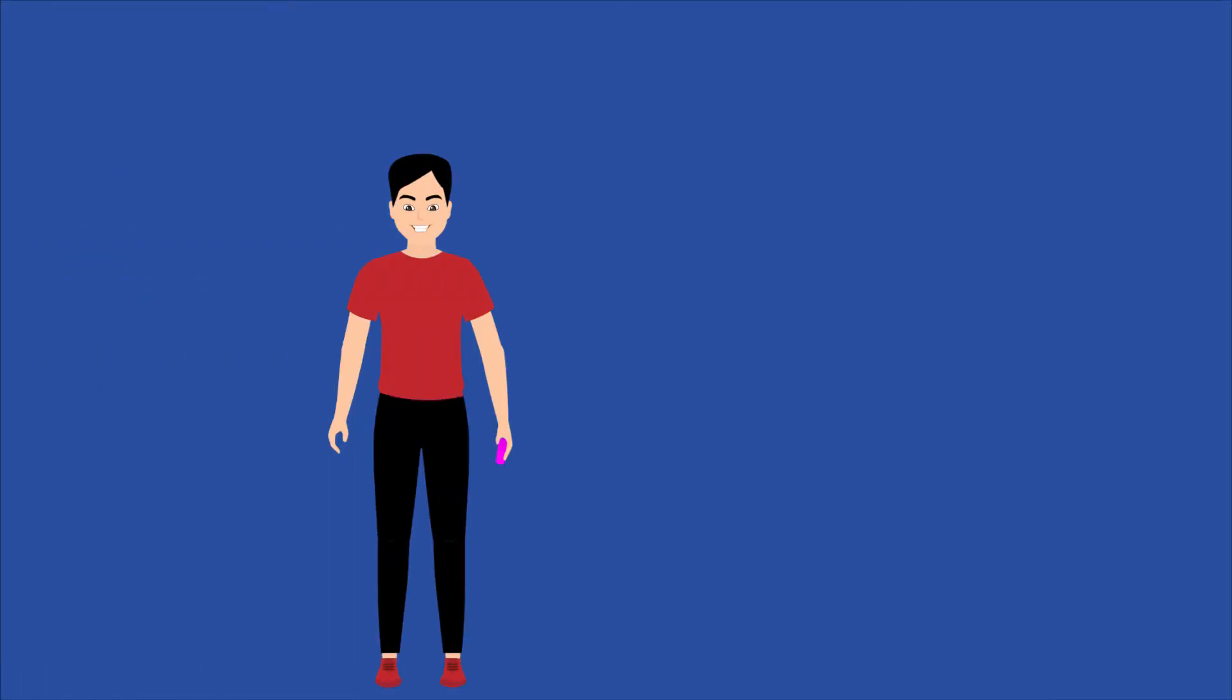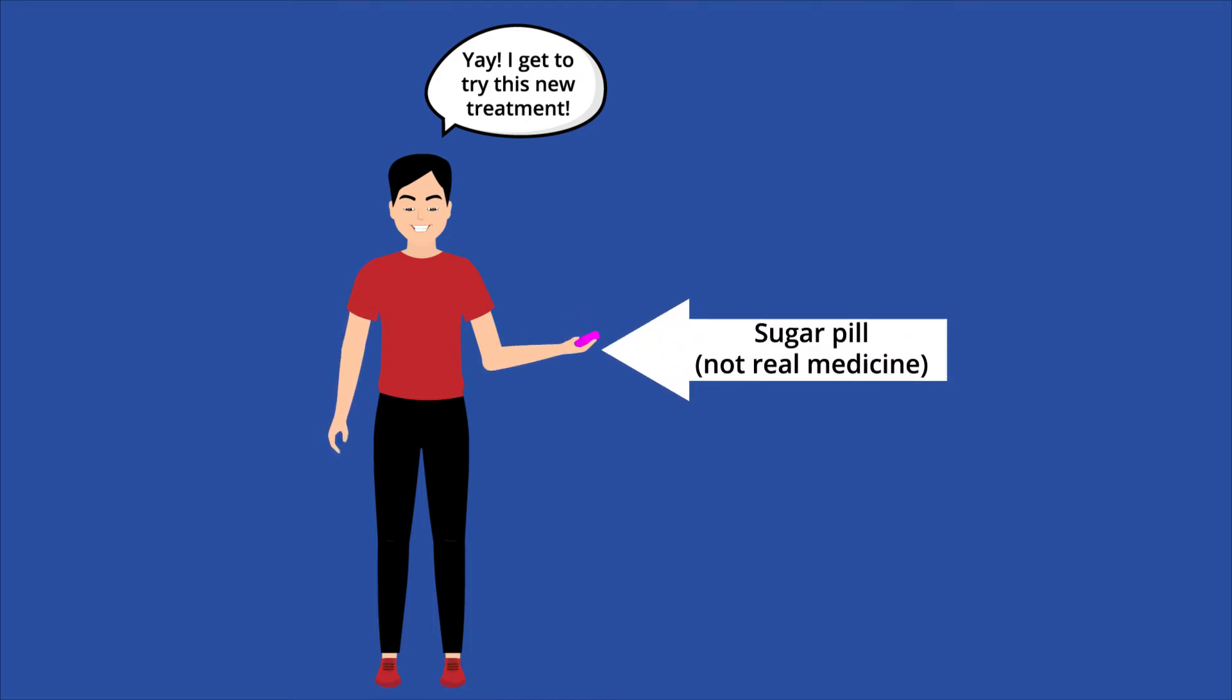So when we want to test the effectiveness of a new medicine, we assign one group the treatment and another group the placebo, making them the experimental group and the placebo group respectively. For many studies, the placebo group is the replacement for the control group.